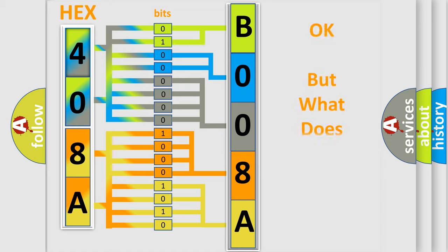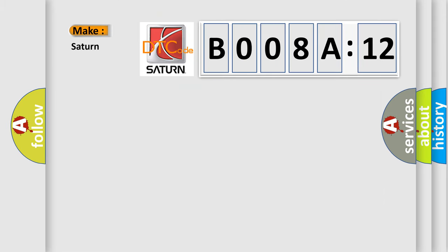The number itself does not make sense to us if we cannot assign information about what it actually expresses. So, what does the diagnostic trouble code B008A:12 interpret specifically for Saturn car manufacturer? The basic definition is: sun sensor signal too high.